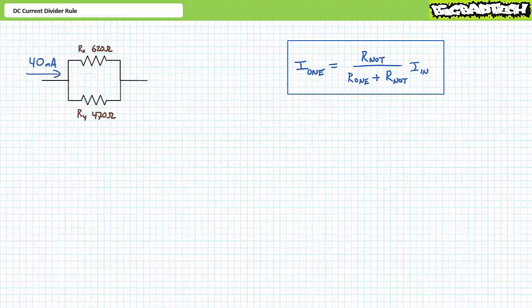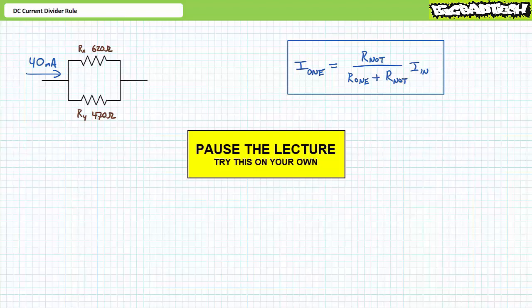Put your understanding of the DC current divider rule to the test with this example. Given a parallel relationship of RX, a 620 ohm resistor, and RY, a 470 ohm resistor, known to experience 40 milliampers of incoming current, see if you can use the current divider rule to solve for current through each resistor. By all means, pause the lecture and try this on your own.